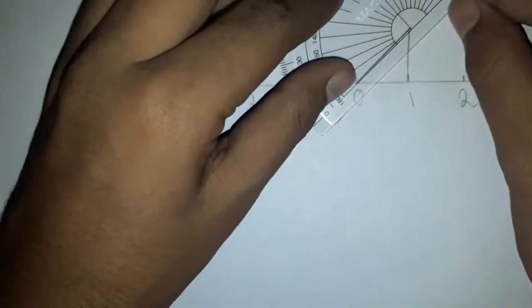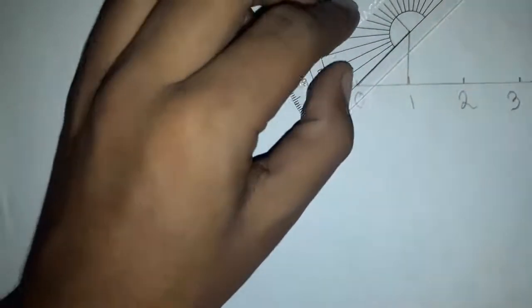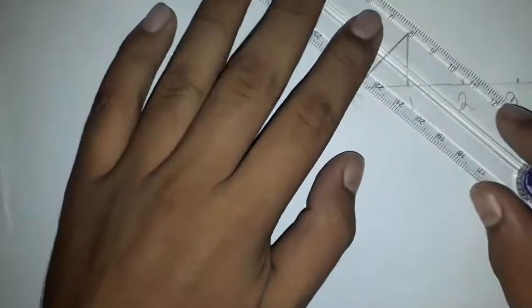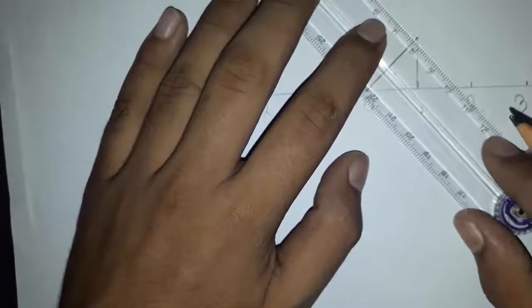Now take your protractor and measure the angle 90 degrees from the point. This is your 90 degrees.